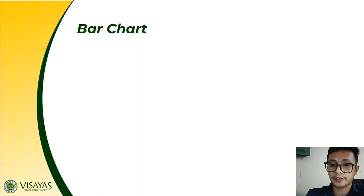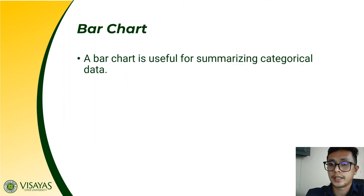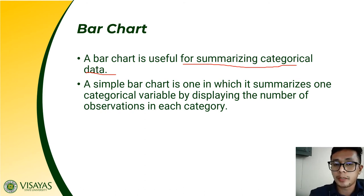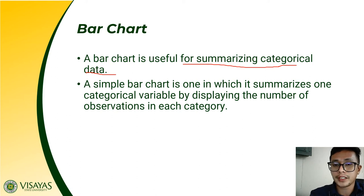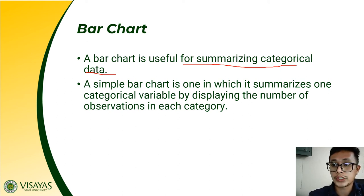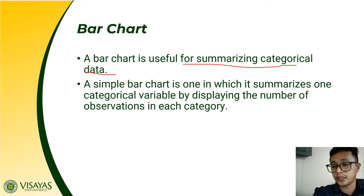Another important plot is the bar chart. A bar chart is useful for summarizing categorical data. To recap: the basic plot uses the plot function, histogram uses hist, normal probability plot uses qqnorm, and stem-and-leaf uses the stem function. All four are for continuous variables. Now, the bar chart is applicable for categorical data.